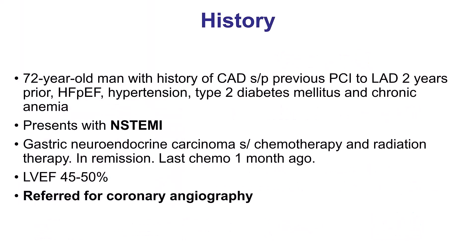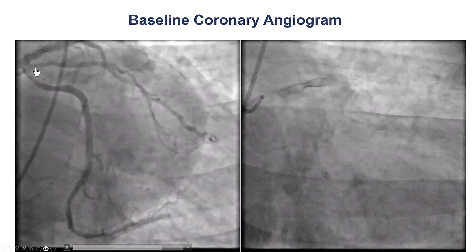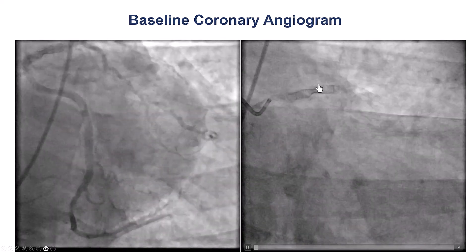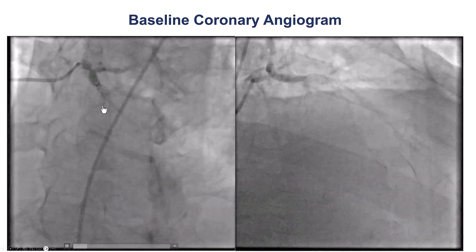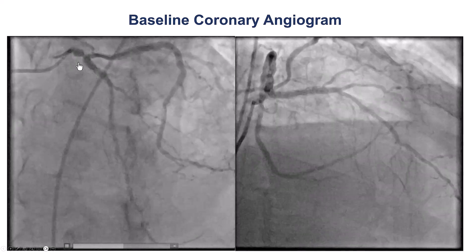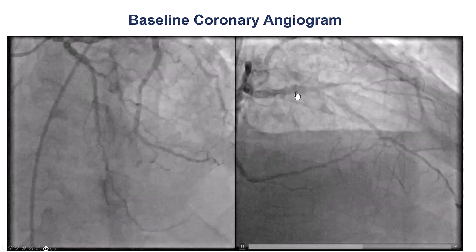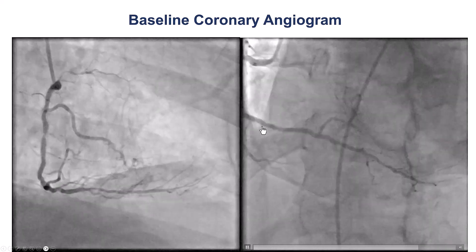The patient was a gentleman with previous PCI to the LAD two years prior who came in with a non-ST elevation myocardial infarction, borderline low ejection fraction, and severe disease on angiography. These are the previously placed stents into the LAD. There's an area of under-expansion that is actually visible even on fluoroscopy. There is also significant left main disease, with severe narrowing of the distal left main at the bifurcation and significant under-expansion of the proximal LAD stent, whereas the right coronary artery had some filling defects in the proximal and mid-segment.